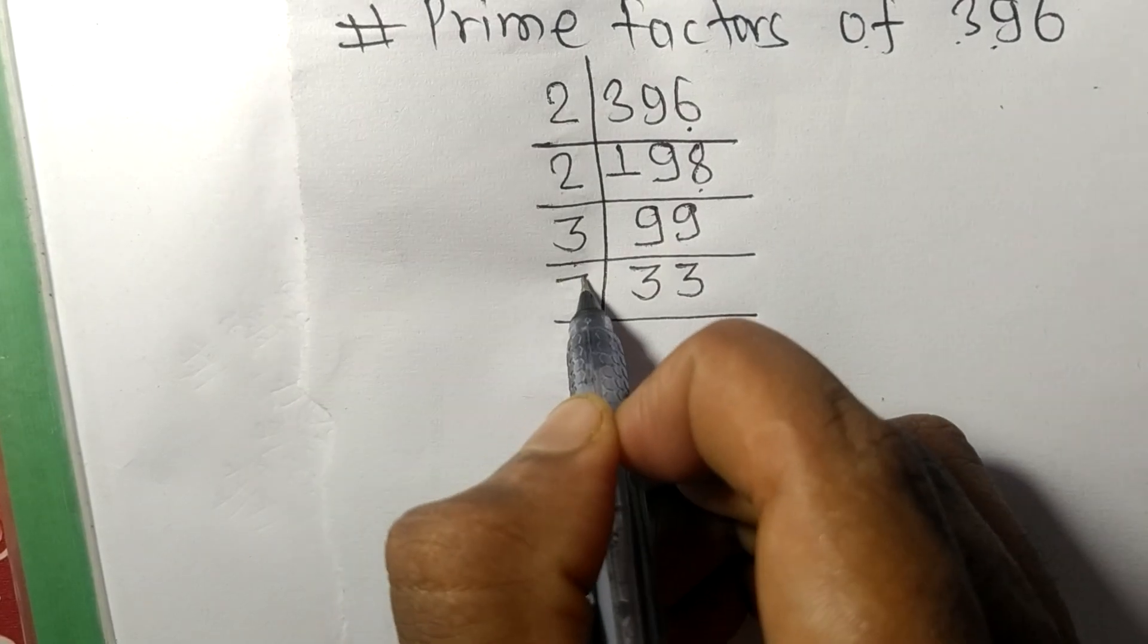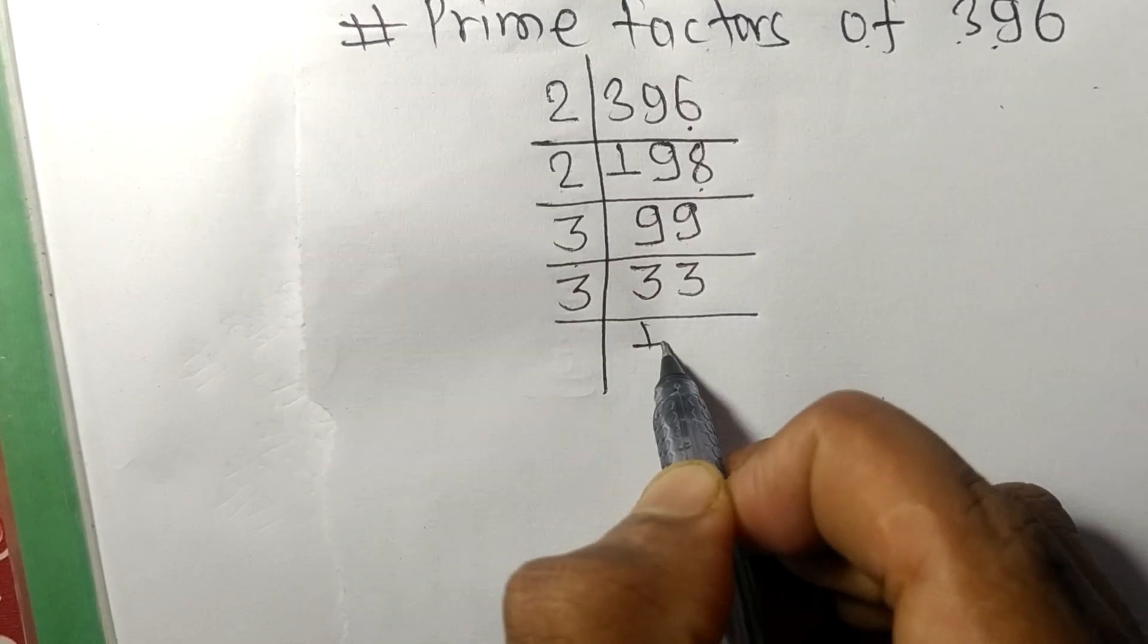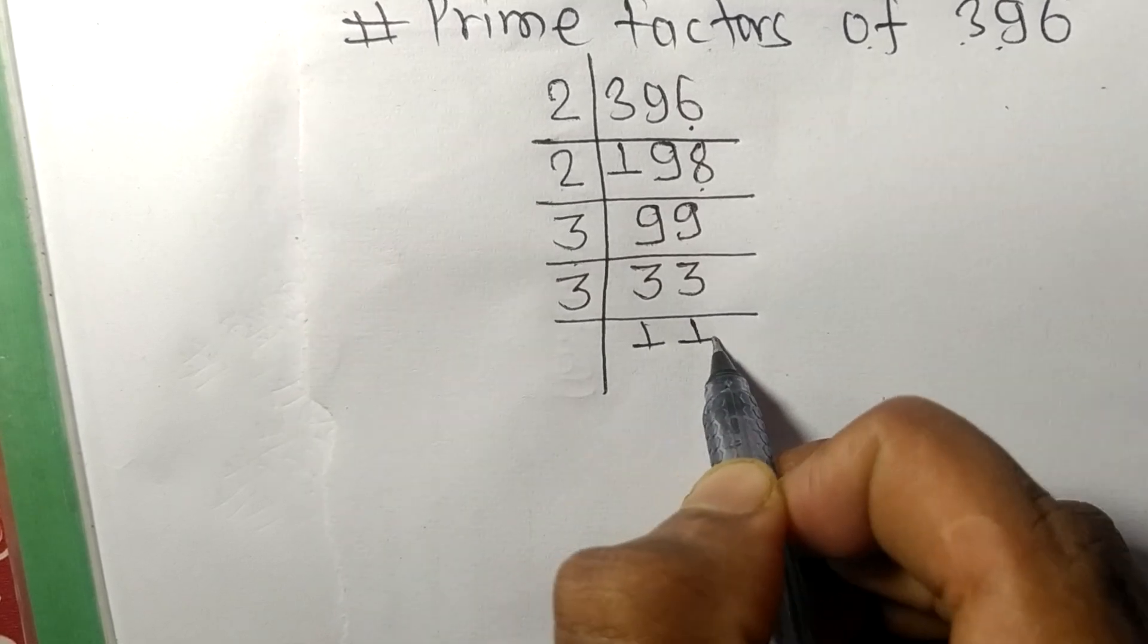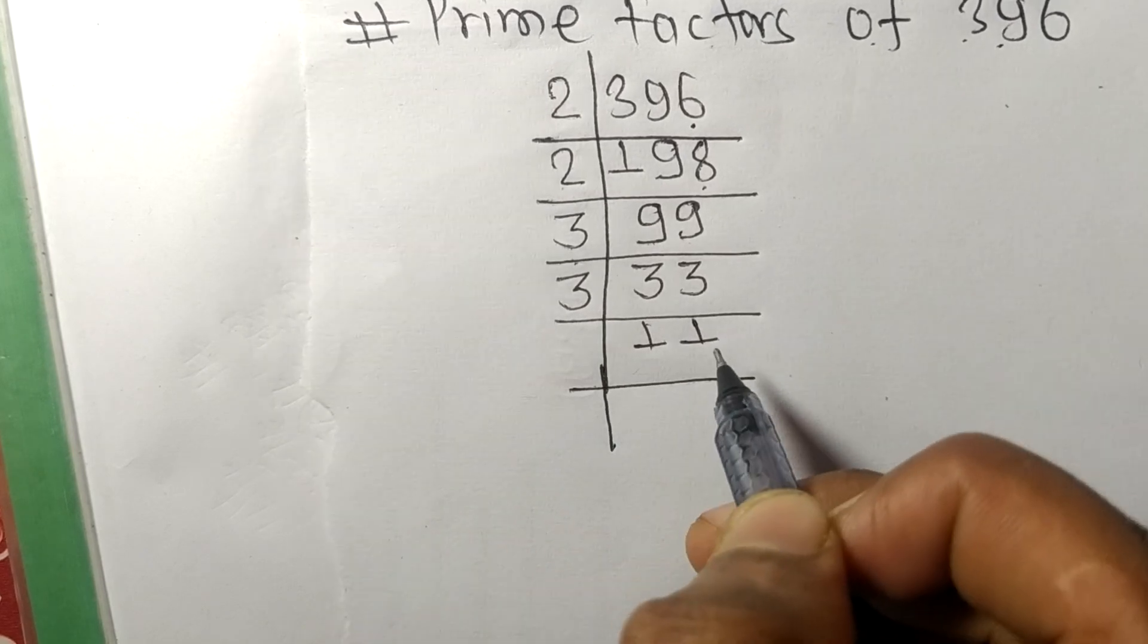33 is divisible by 3. 3 times 1 equals 3, 3 times 1 equals 3. Now we got 11.